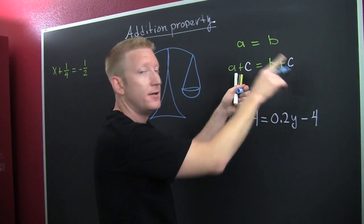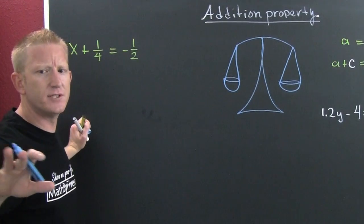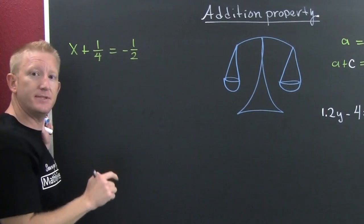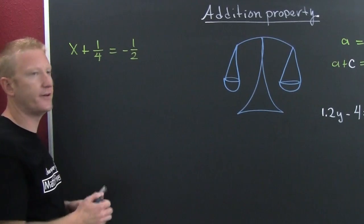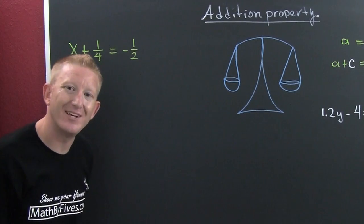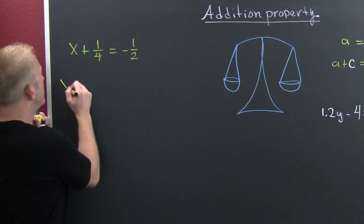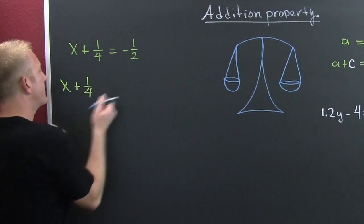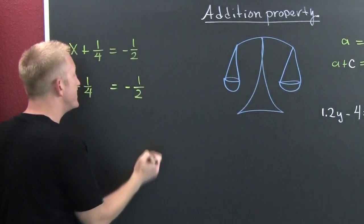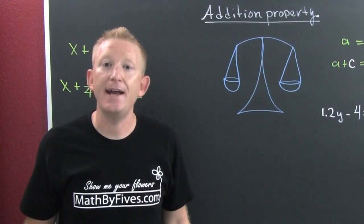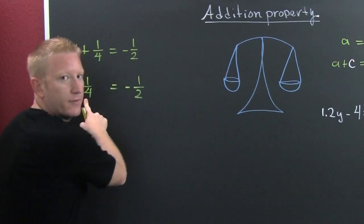Let's look at an example. I'm trying to get x by himself — right now he's got one-fourth with him. I want to take the same thing off of each side to maintain equality. I need to take the additive inverse: the additive inverse is the number that when added to a number the sum is zero. To get rid of a positive one-fourth, I subtract one-fourth.